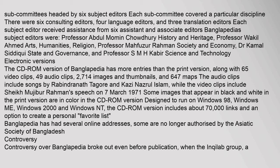The CD-ROM version of Banglopedia has more entries than the print version, along with 65 video clips, 49 audio clips, 2,714 images and thumbnails, and 647 maps. The audio clips include songs by Rabindranath Tagore and Qazi Nazrul Islam, while the video clips include Sheikh Mujibur Rahman's speech on 7 March 1971. Some images that appear in black and white in the print version are in color in the CD-ROM version. Designed to run on Windows 98, Windows ME, Windows 2000, and Windows NT, the CD-ROM version includes about 70,000 links and an option to create a personal favorites list.